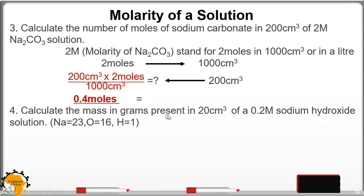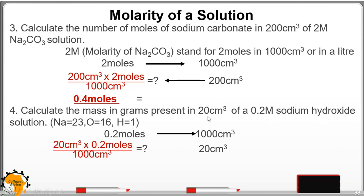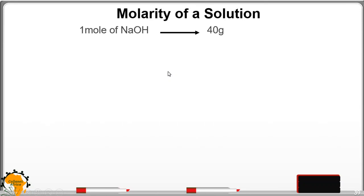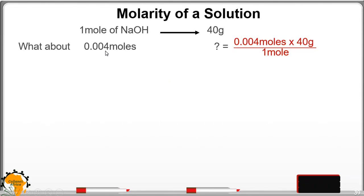Example 4: Calculate the mass in grams present in 20 cm³ of 0.2 M sodium hydroxide solution. Interpret: 0.2 M means 0.2 moles in 1,000 cm³. What about in 20 cm³? Cross-multiplying gives 0.004 moles. But the question asks for mass. We know 1 mole of sodium hydroxide has a mass of 40 grams. Therefore, 0.004 moles will have a mass of 0.16 grams.